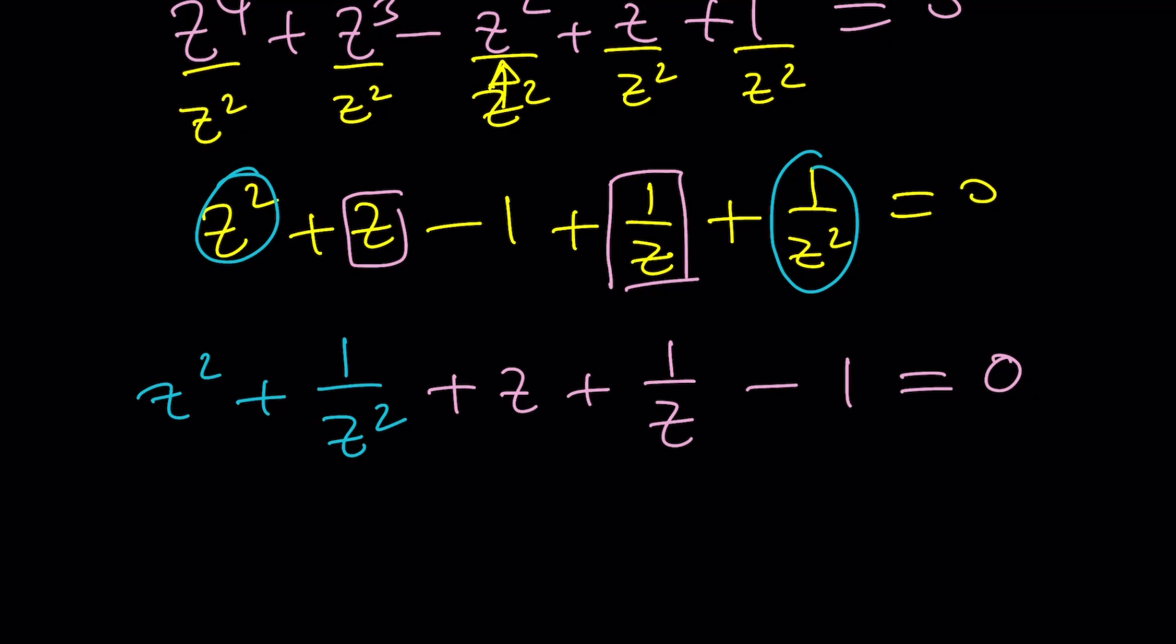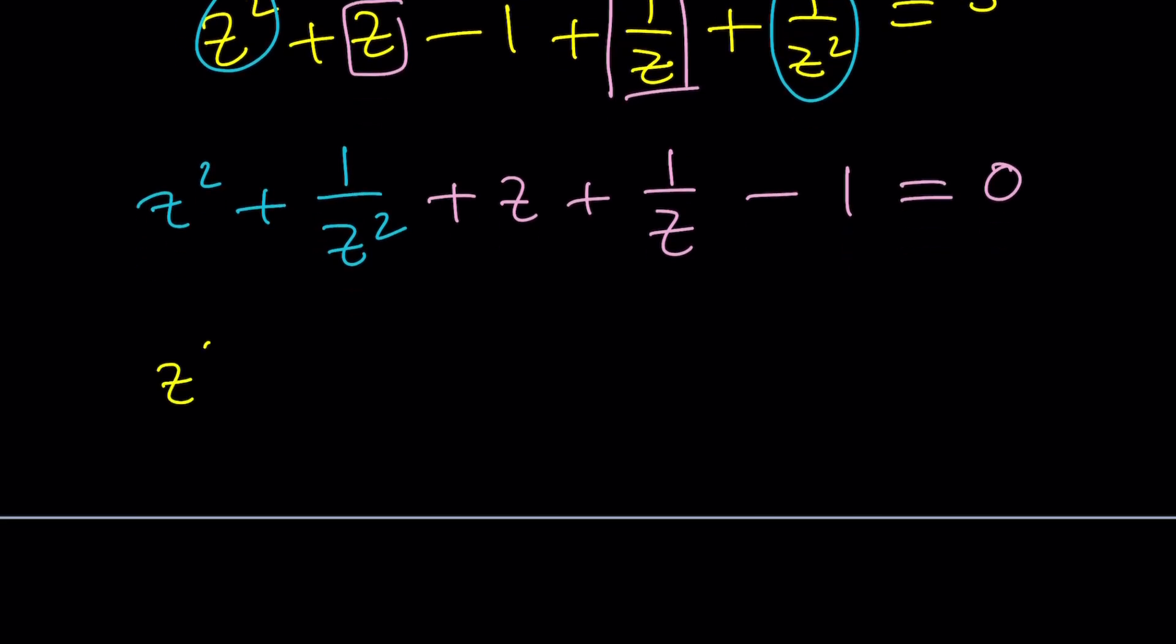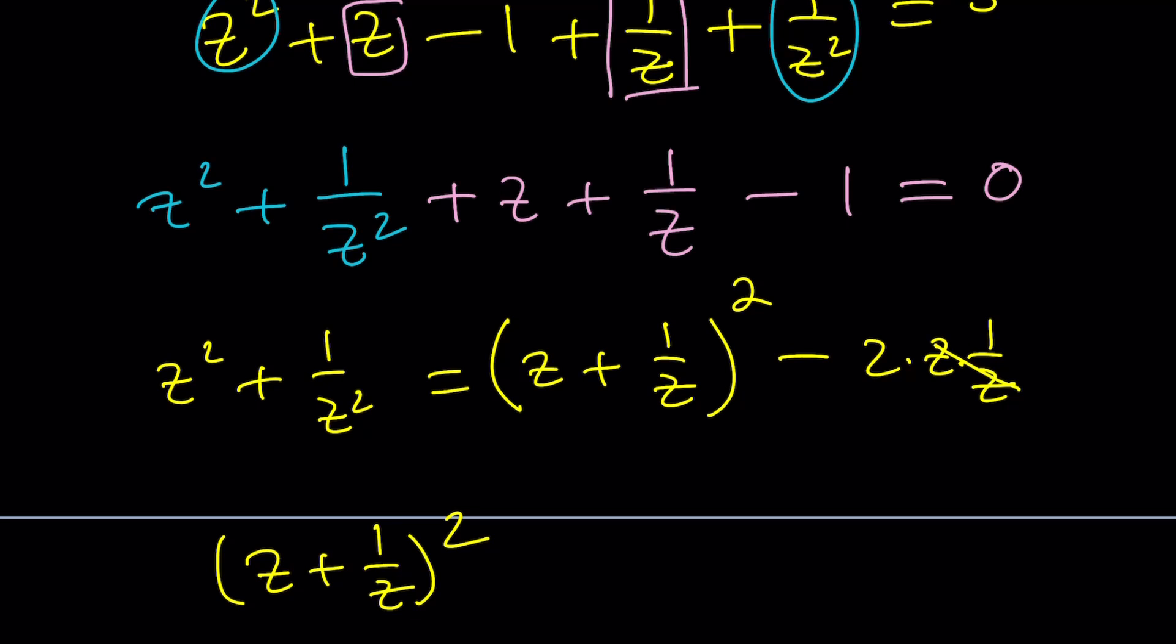How do we proceed? Notice that z squared plus 1 over z squared can be written as z plus 1 over z squared minus 2ab which is 2z times 1 over z. Okay. But those two terms cancel out leaving us with a minus 2. You could also achieve the same result if we just took this and squared it and that would give you the same thing. But this one is a little better because we're going to be able to directly substitute it. Okay.